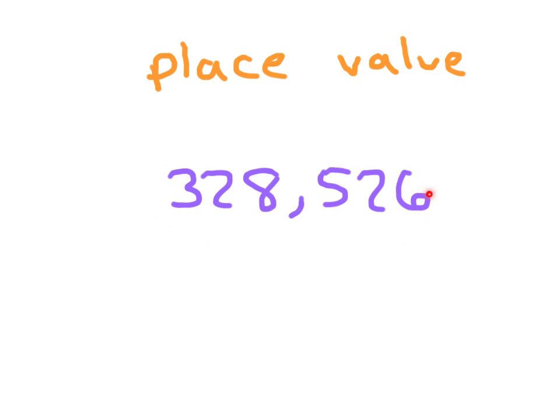The other thing we need to talk about is place value. There are different place values for each of these numbers as well. For instance, the value of that 6 is 6, but it is in the ones place. There's a difference between value and place value.